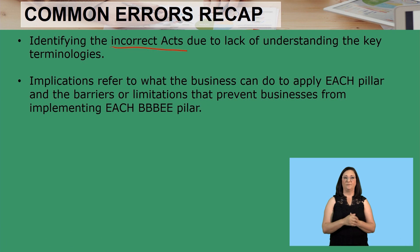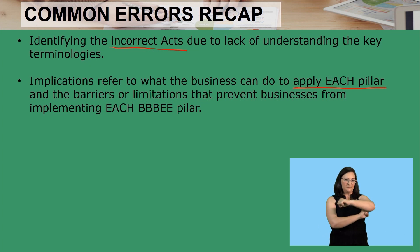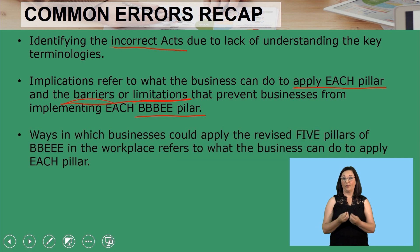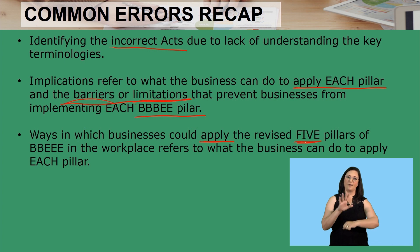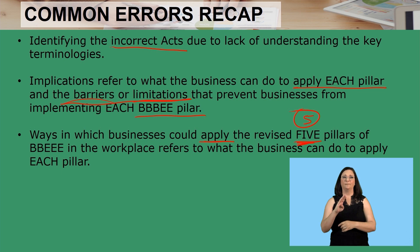Secondly, we spoke about the implications — what the business can do to apply each pillar, and the barriers or limitations that prevent the business from implementing each pillar. After the implications, we also looked at the ways in which a business could apply the revised five pillars — please take note, it is five pillars, not three, not seven — ways in which a business could apply the revised five pillars of Triple BEE in the workplace.